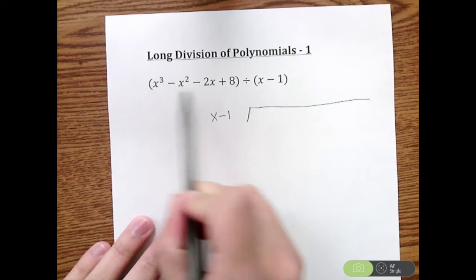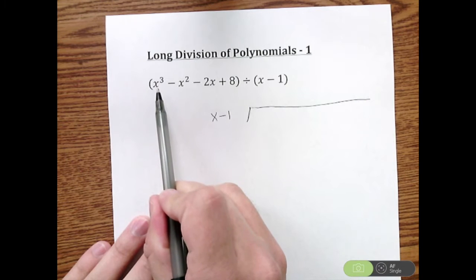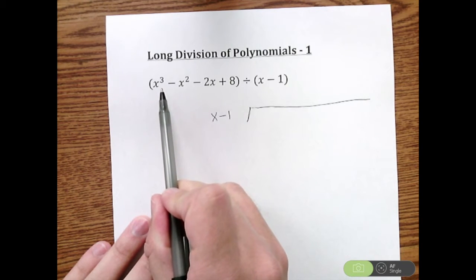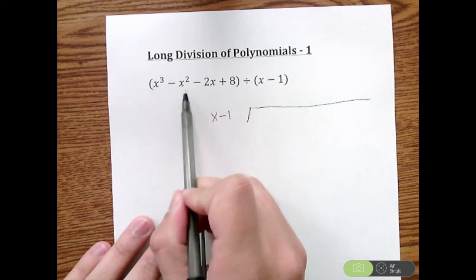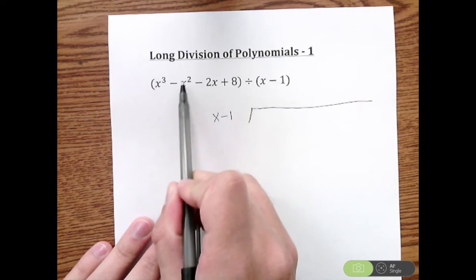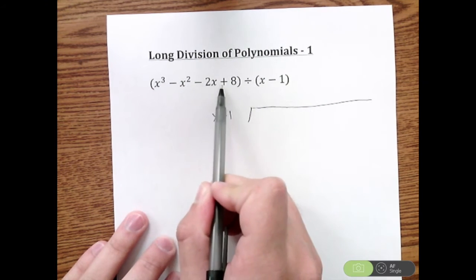Now what I'm going to do is I want to make sure I show every single power of X, meaning I have to go X to the third, X to the second, X to the first, and then our constant. If there is one of these missing,